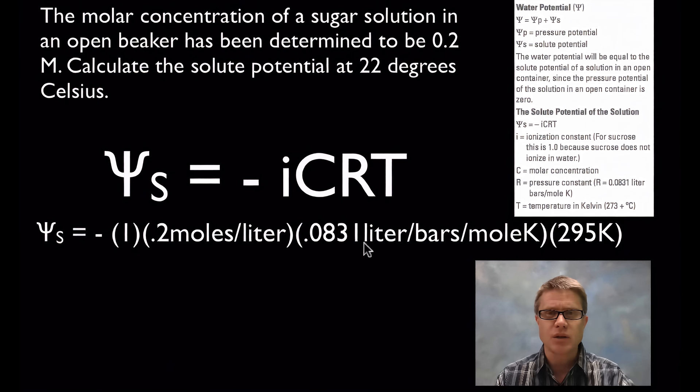Next thing is going to be my pressure constant. I'm simply copying that off the sheet, we've got it right here. And then I'm going to have my temperature. Since they told me it was 22 degrees Celsius I'm adding that to 273, so I get 295 K.